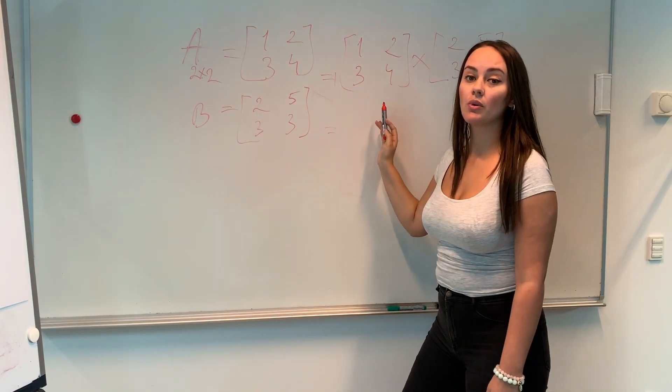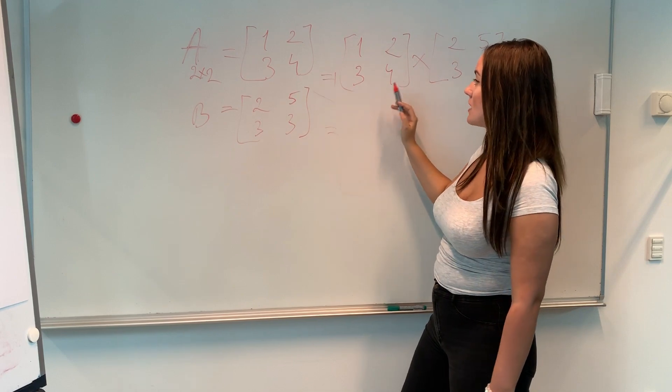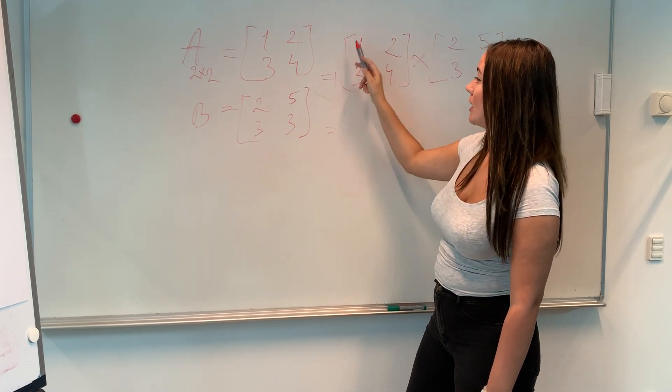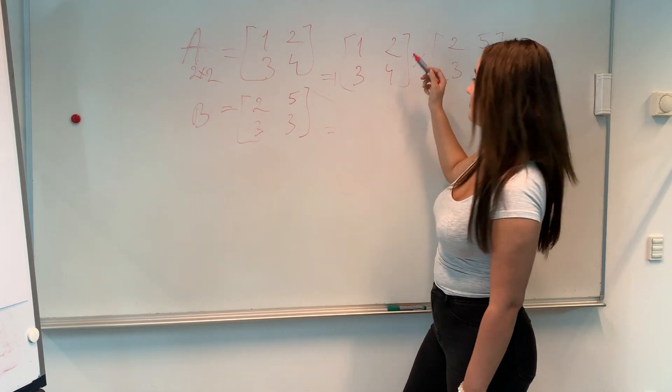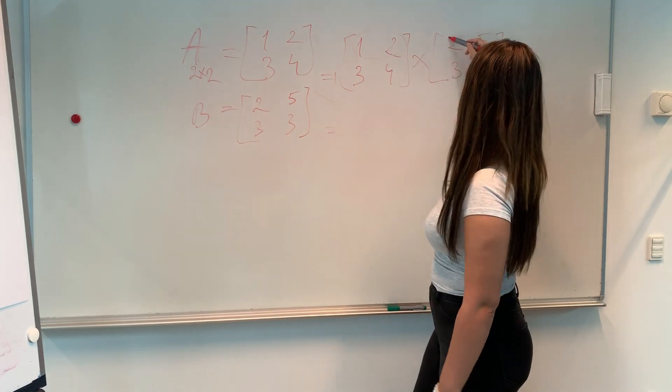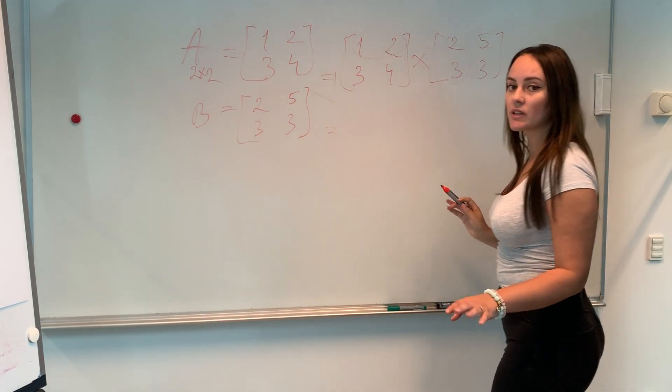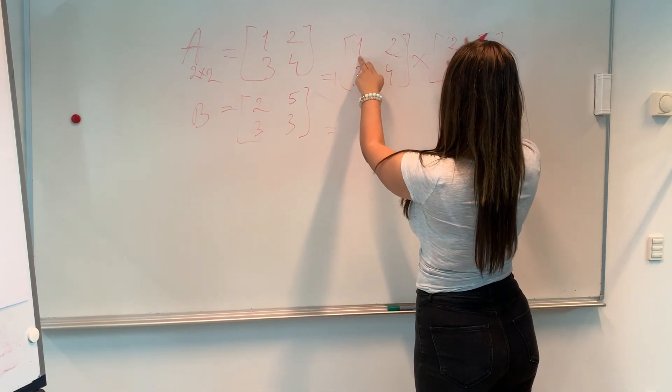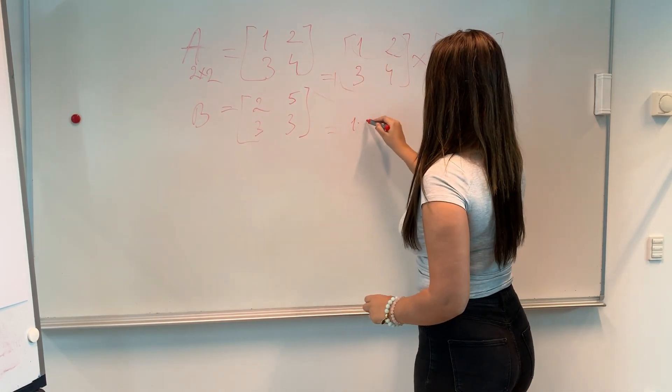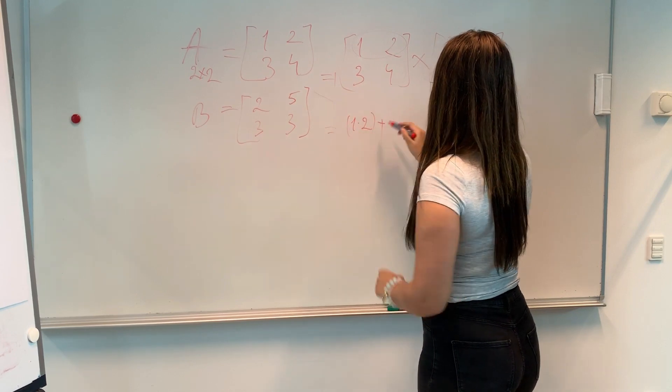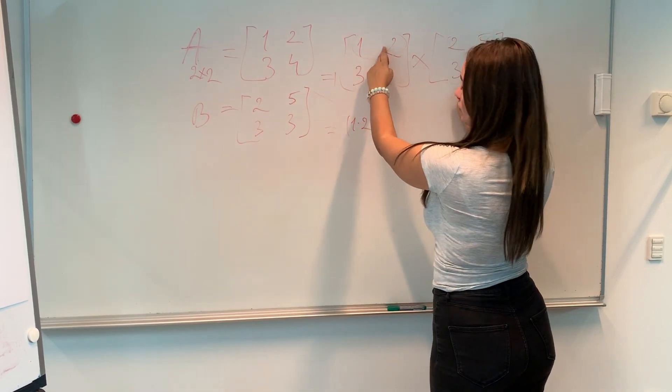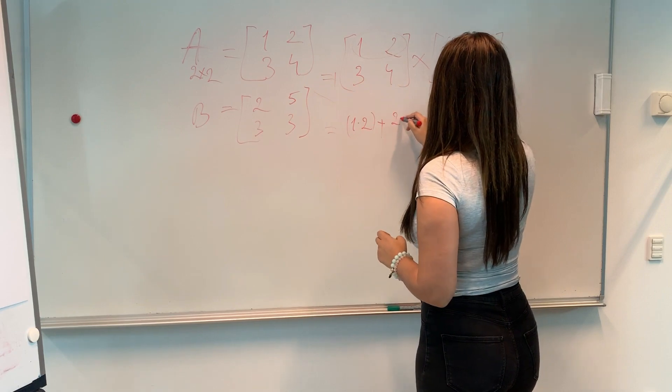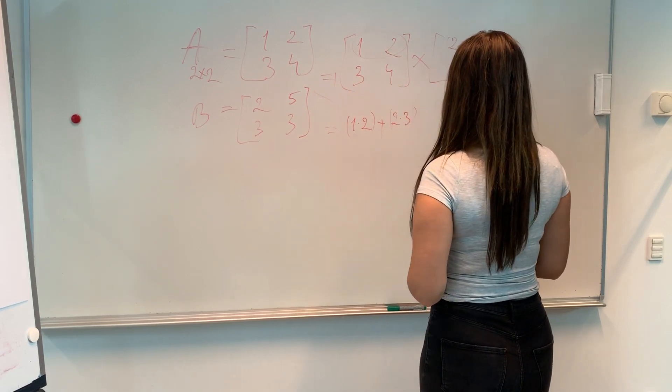Basically, what we need to do when we multiply, we will have to take the first row with the first column. So it's going to be like this. I know it's a bit confusing now, but let's take it one by one. One times two. I'm just going to write it like this. Plus two times three. And this is the first element.